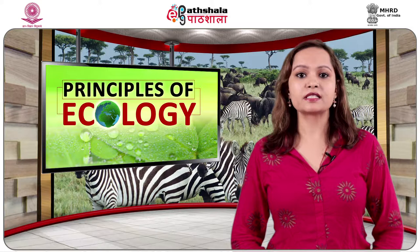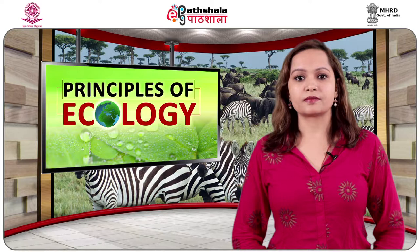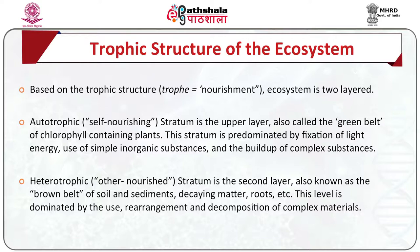Now we study about the structure of the ecosystem — specifically the trophic structure. Based on the trophic structure, the ecosystem is two-layered: first, autotrophic, and second, heterotrophic. Autotrophic means self-nourishing; the stratum is the upper layer, also called the green belt of the chlorophyll-containing plants. Heterotrophic means other-nourished; the stratum is the second layer, also known as the brown belt of soil and sediments, decaying matter, roots, etc.